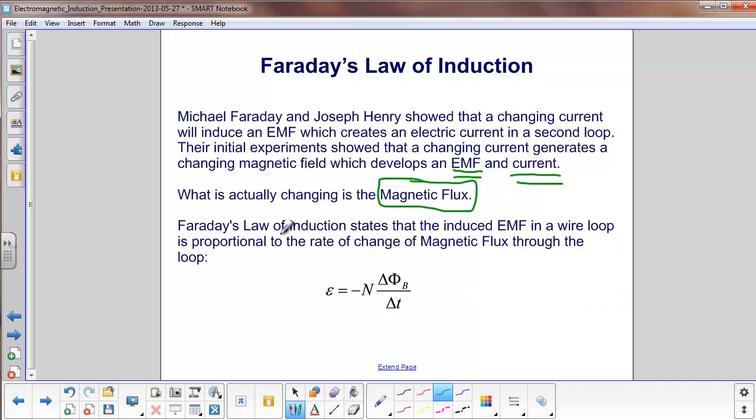So, here we go. Faraday's Law of Induction states that the induced EMF, that's over here, in a wire loop, is proportional to the rate of change of the magnetic flux through the loop. That's this delta magnetic flux over delta T, change in magnetic flux per unit time.